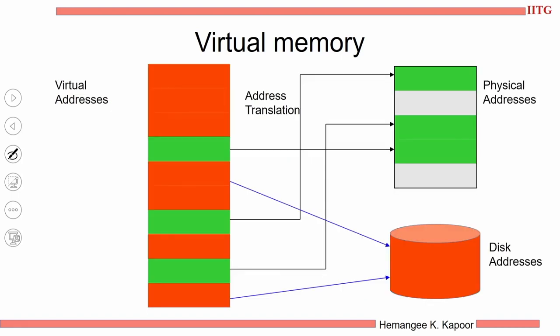The virtual address space for a process P1 is dimensionally very large, while the physical address space — the RAM — is of limited size. Only the green-colored pages are presently available in the RAM, whereas pages shown in red or orange are not loaded right now — they are sitting in the disk. The disk and the RAM together help me to access the complete virtual address space of process P1.